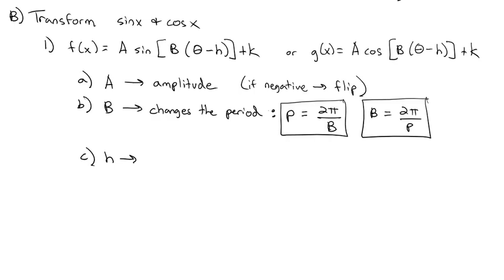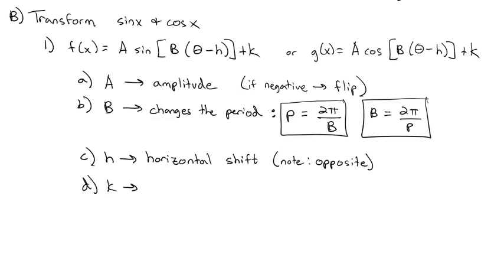H is the horizontal shift — remember, it goes the opposite of what you expect, because it's already negative in the formula. So minus 5 shifts to the right 5, and plus 5 shifts to the left 5. K represents the vertical shift. We usually do the vertical shift first as we build our graph, because we need to know where the midline is going to be — the vertical shift affects the midline, and we need the midline to draw the graph up and down from it.